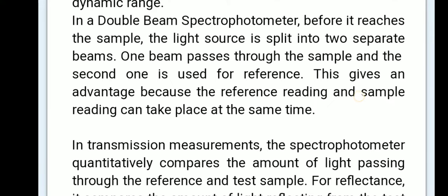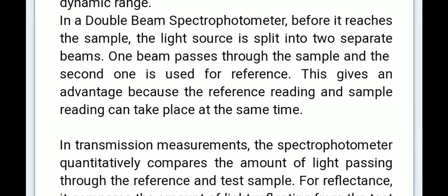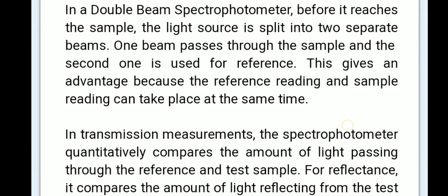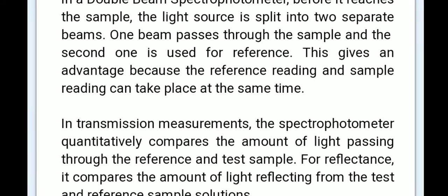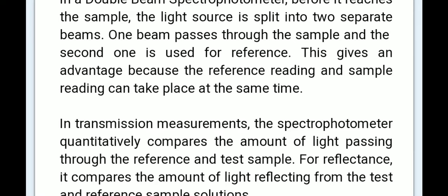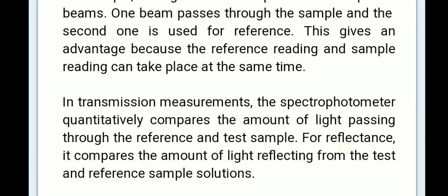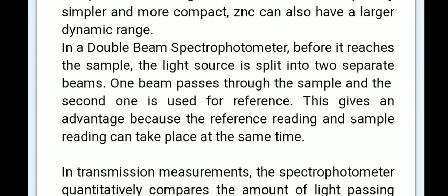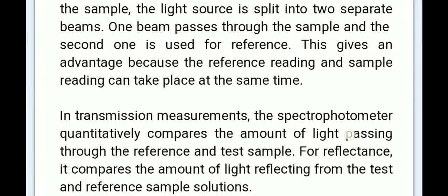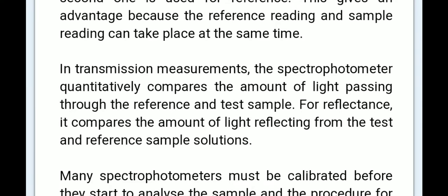In a double beam spectrophotometer, before it reaches the sample, the light source is split into two separate beams. One beam passes through the sample and the second one is used as a reference. This gives an advantage because the reference reading and the sample reading can take place at the same time — the blank and the sample are measured simultaneously. In a single beam spectrophotometer, blank and samples are measured at different times.